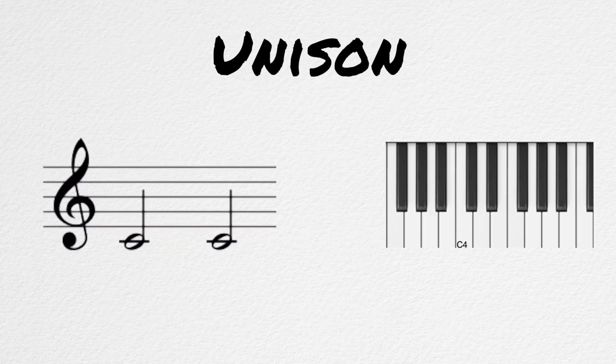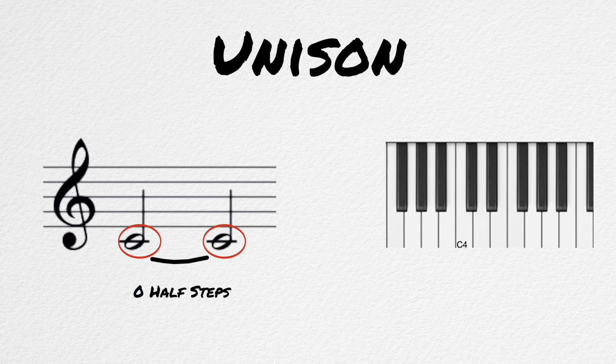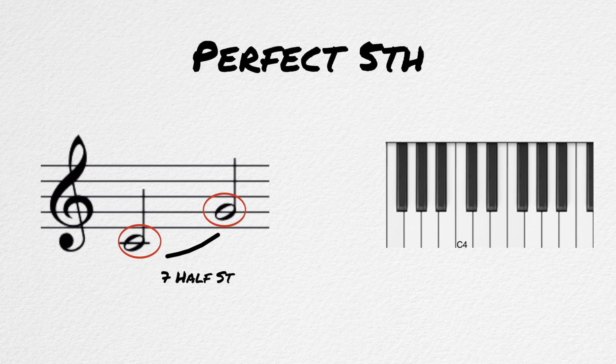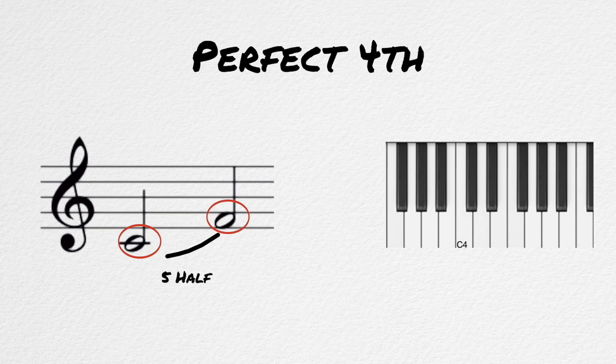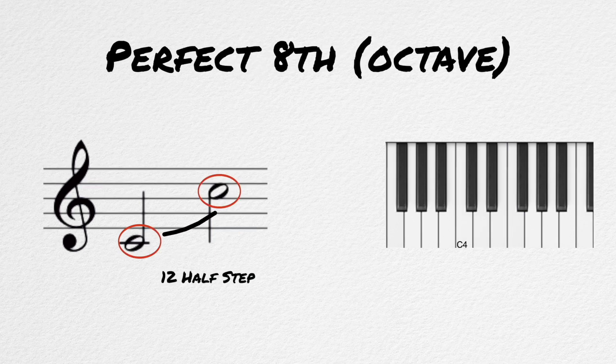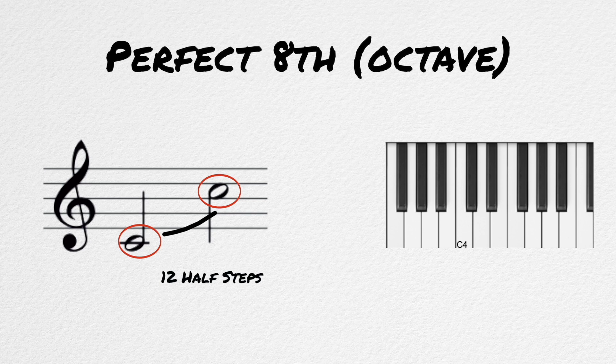The unison is easiest to learn. It has 0 half-steps between them. It is just the same note twice. C to C is a unison. The perfect 5th has a distance of 7 half-steps. C to G is a perfect 5th. The perfect 4th has a distance of 5 half-steps. C to F is a perfect 4th. The perfect 8th, also known as the octave, has a distance of 12 half-steps. C to the next C on the piano is an octave.